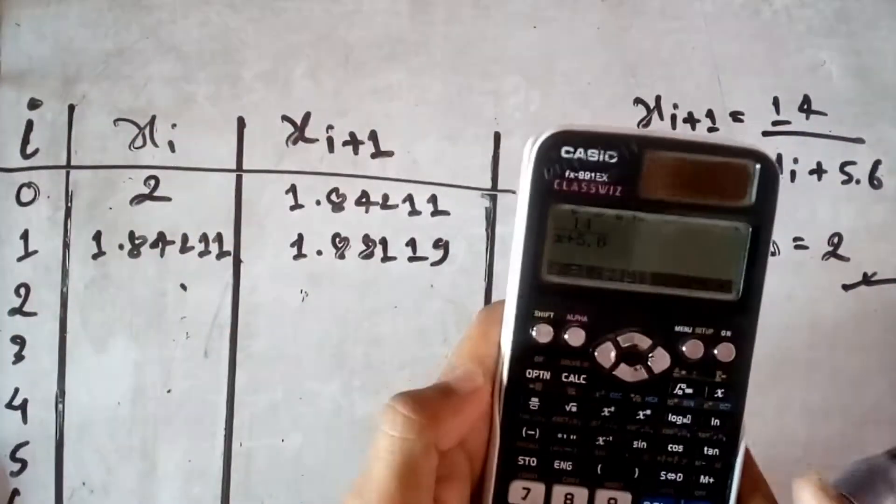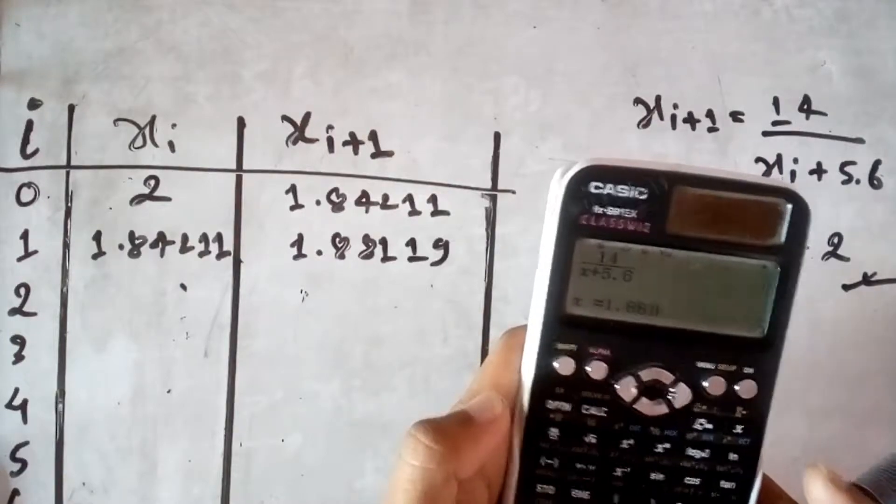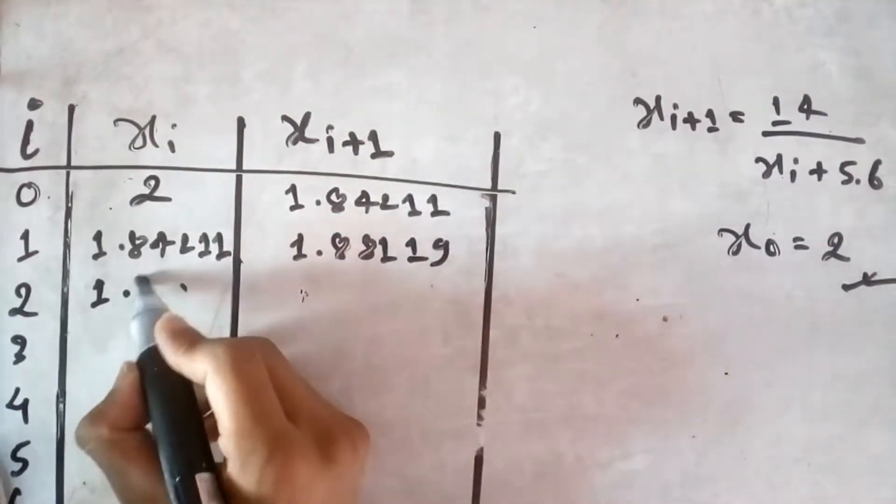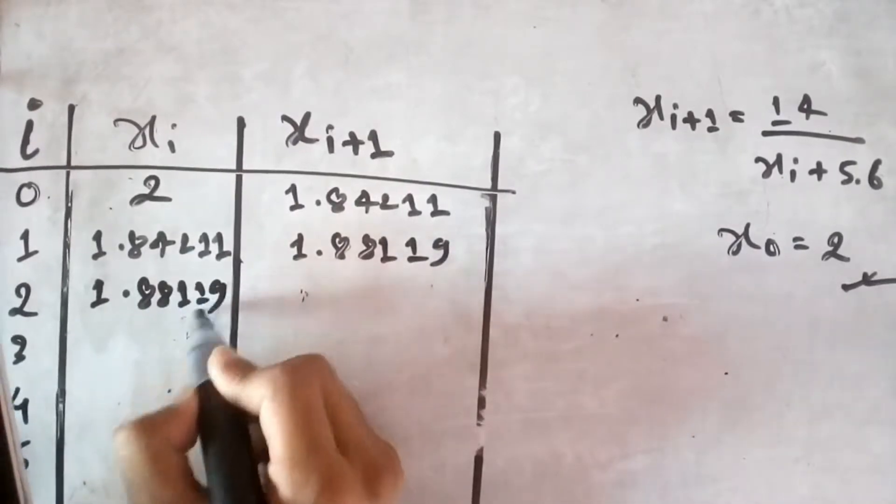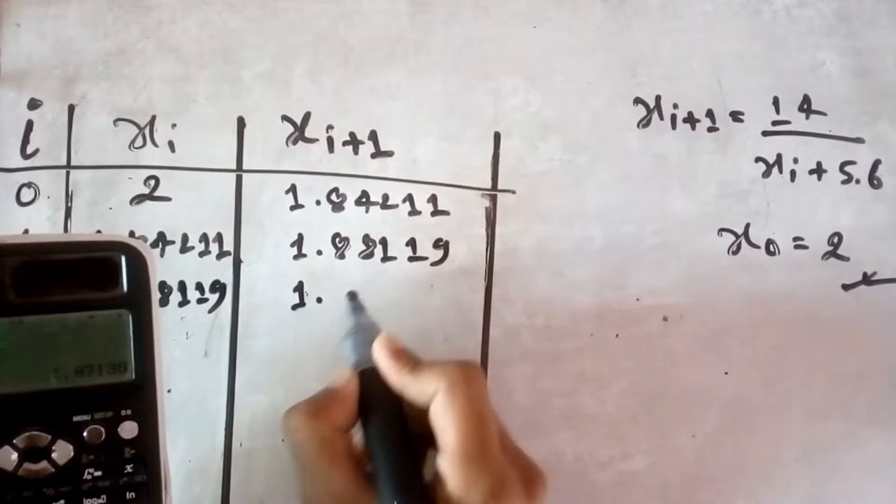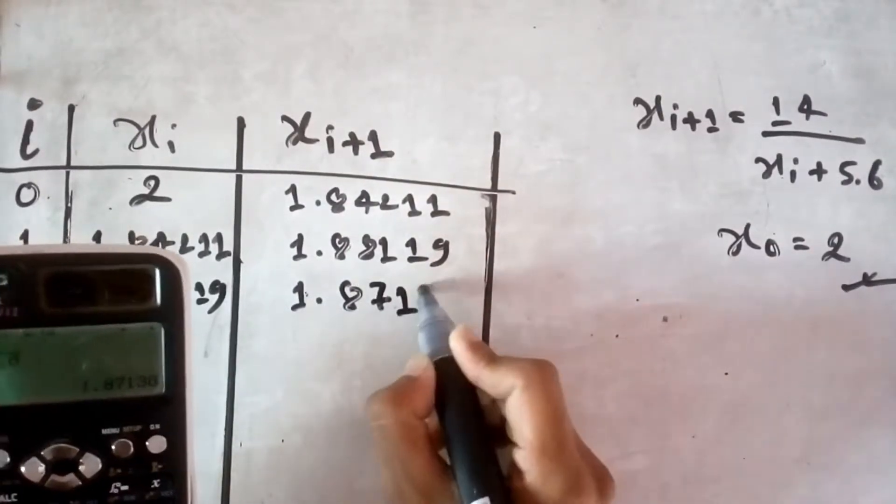Okay friend, let's put 1.88119. Okay, first write it here 1.88119. From 1.88119 we get 1.87136.